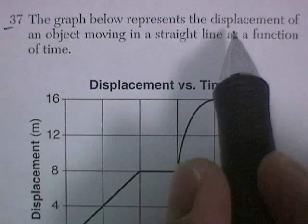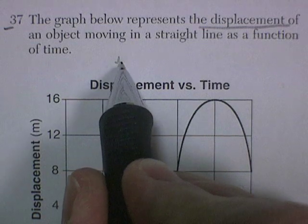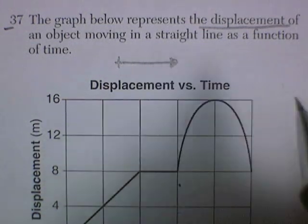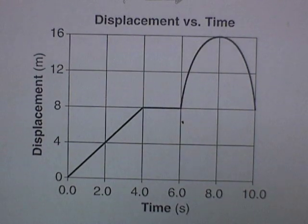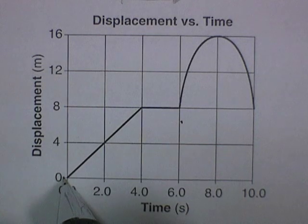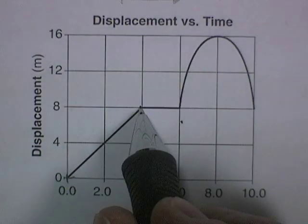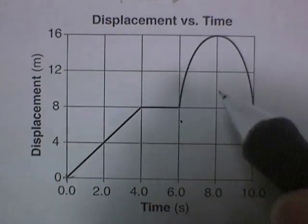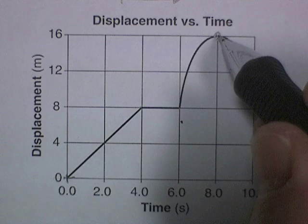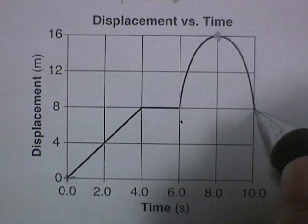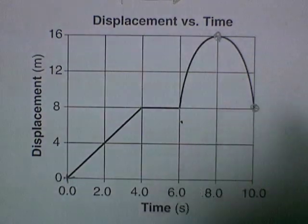Question 37. The graph below represents the displacement of an object moving in a straight line. Keep in mind, displacement is how far it is from its start position. So let's look at this graph. We start at zero displacement. We travel eight meters away in four seconds. We stay at eight meters for a while. Then we travel up to 16 meters away. And then we come backwards back to eight meters away. So our displacement would be eight meters from the rest position.